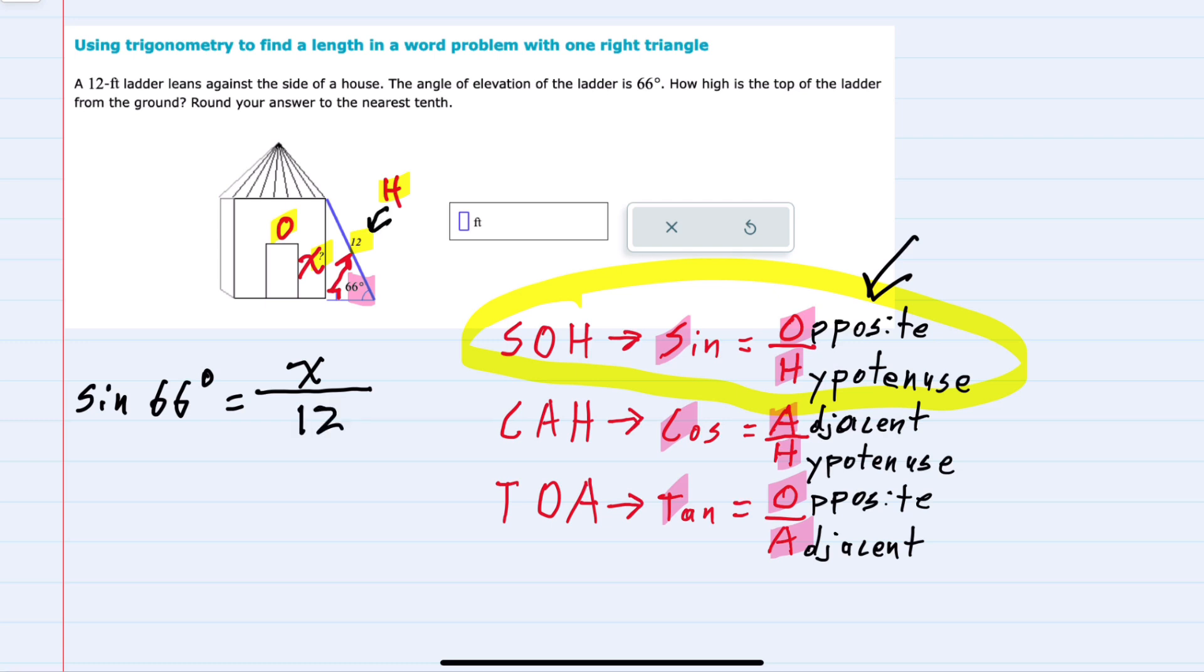From here I can solve for x by just multiplying both sides of this equation by 12. On the right hand side those 12s will cancel, leaving me with x equals 12 times the sine of 66 degrees.